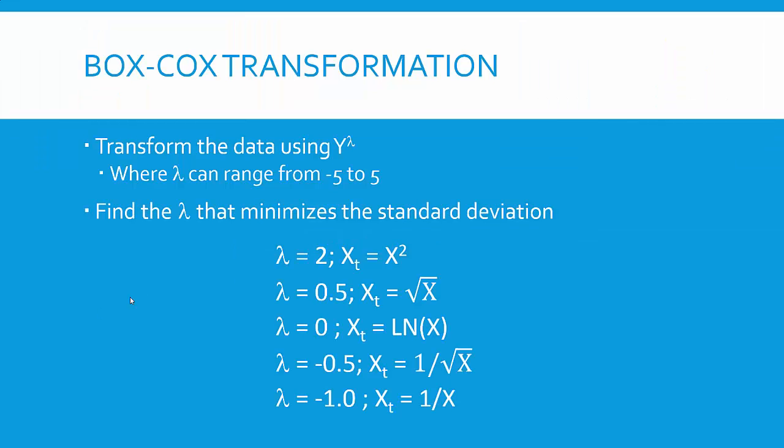So how do you do that? What you do is you transform the data using this equation, y to some value of lambda, power of lambda. And lambda can range from minus 5 to 5. And what you want to do is find the lambda that minimizes the standard deviation.